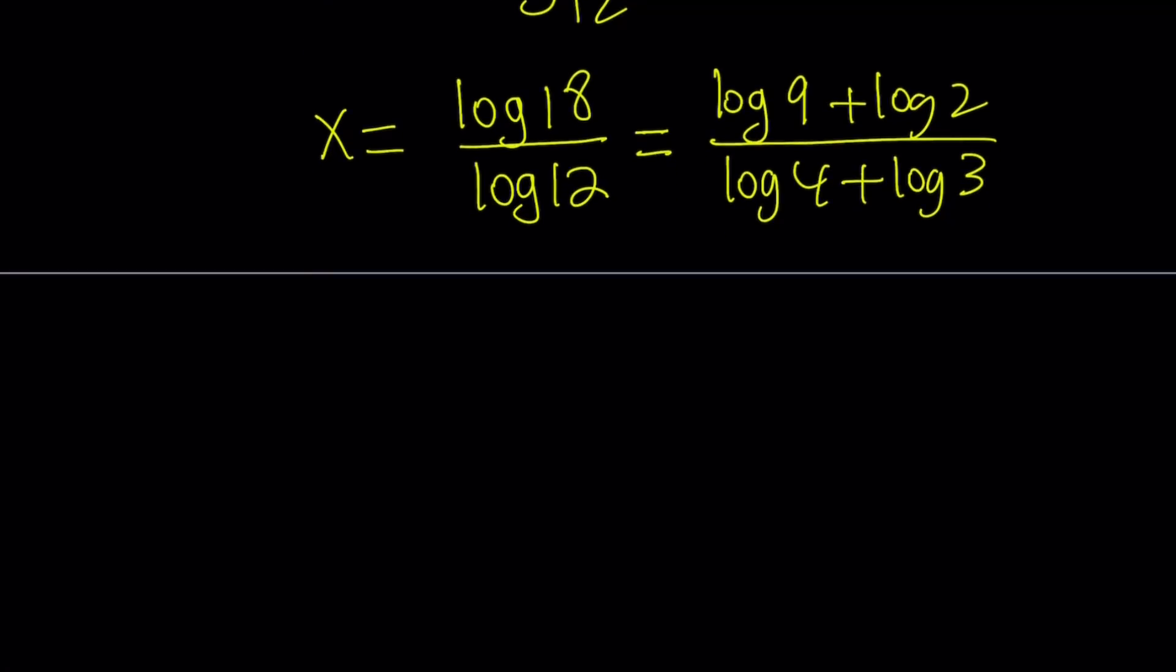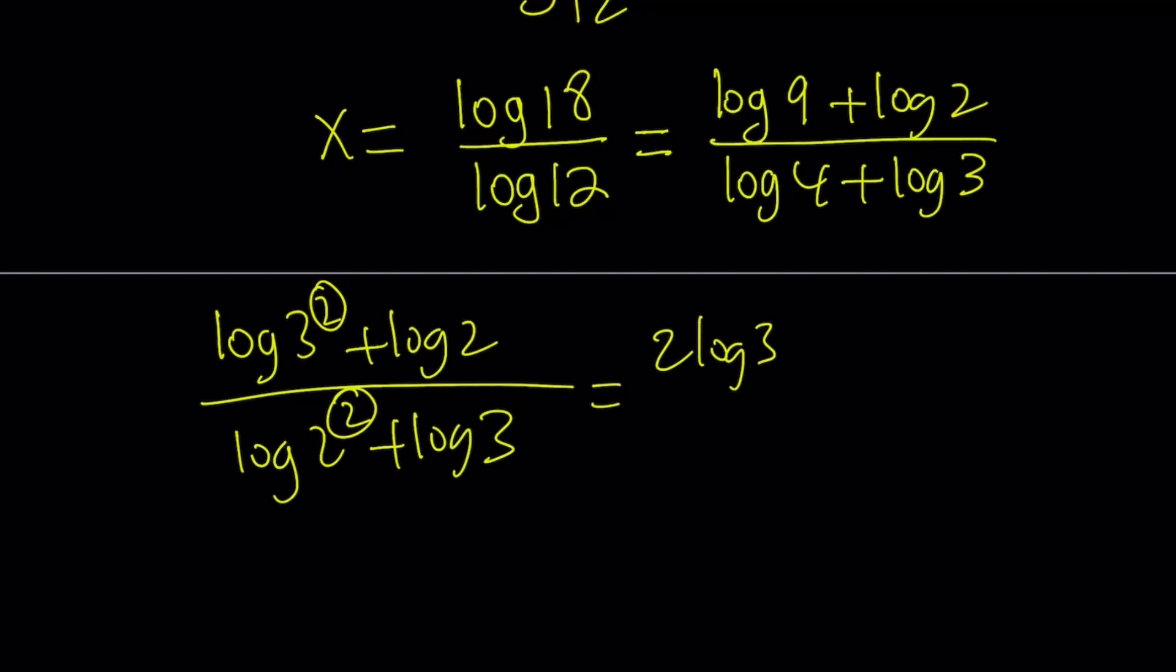Now we're going to use another property because 9 can be written as 3 squared and 4 can be written as 2 squared. Otherwise, the others are good because they're prime. Now we can go ahead and move these powers to the front.